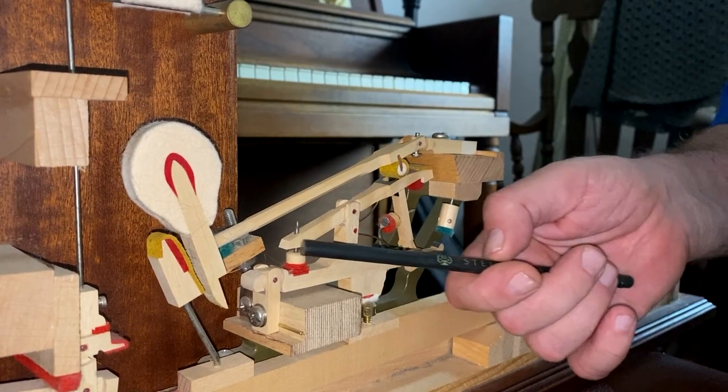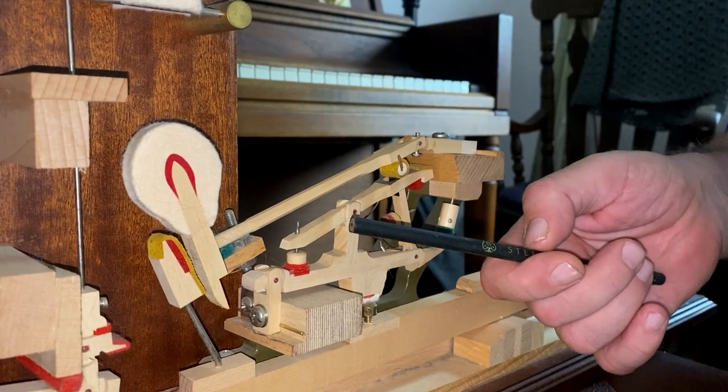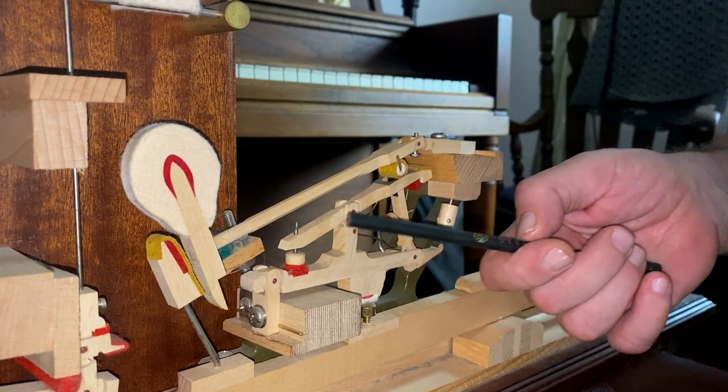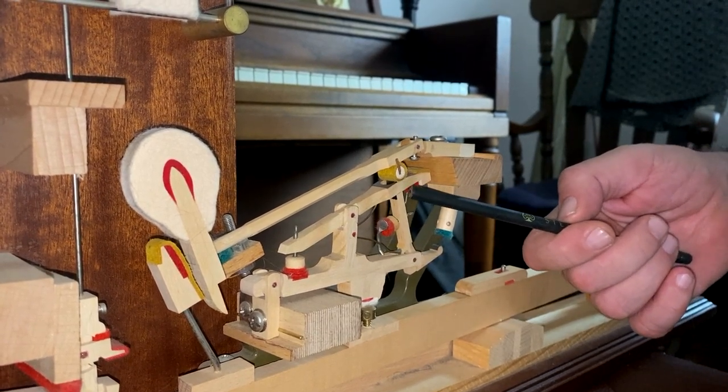This is a double escapement whipping. What Sebastian Erard did is he added this piece here, which is called the repetition lever.